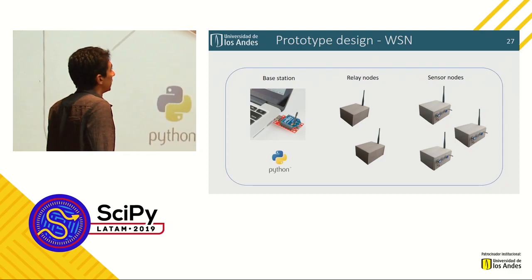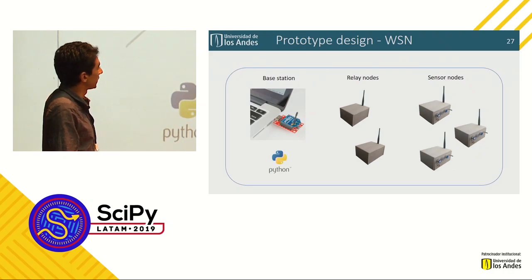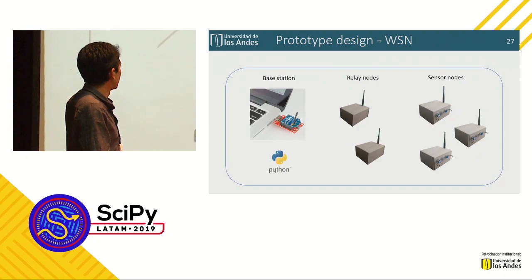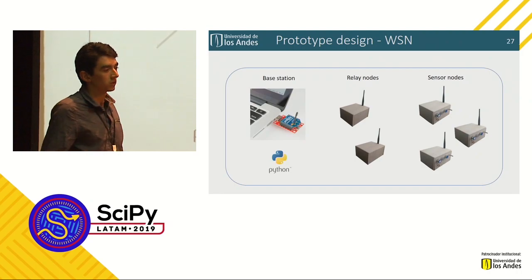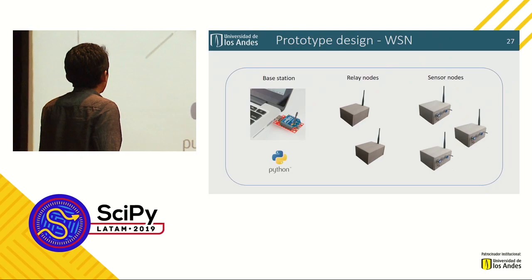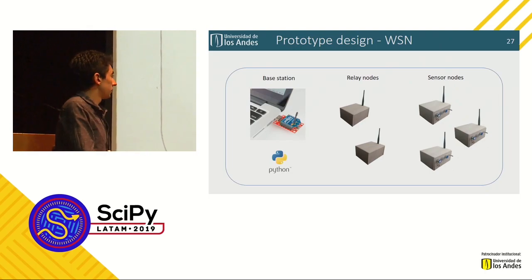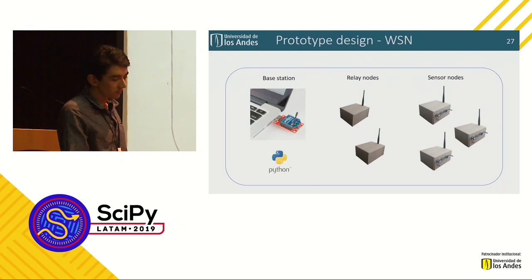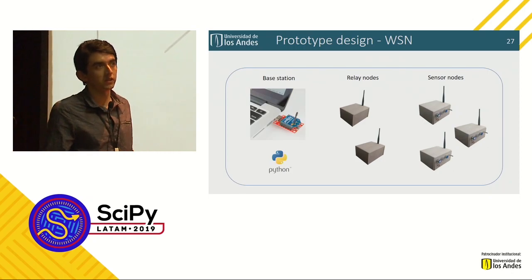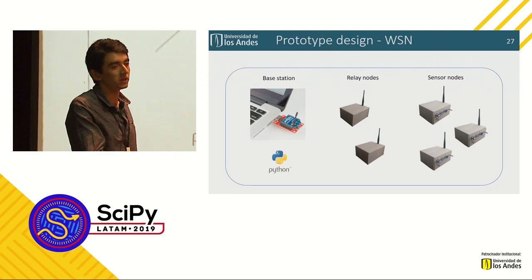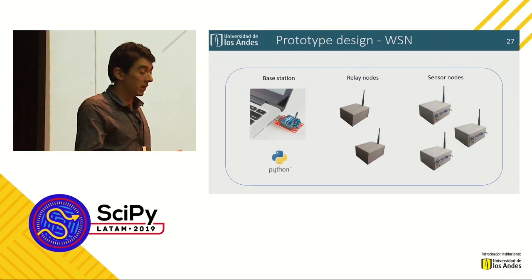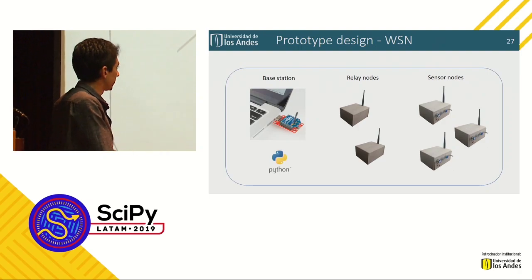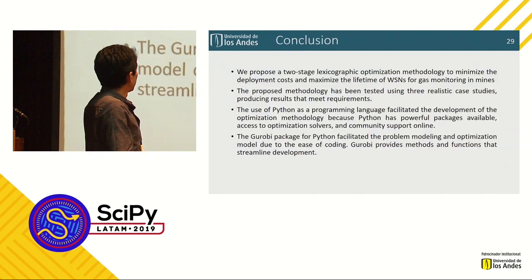We designed a prototype to implement our approach — a tabletop prototype with three sensor nodes, two relay nodes, and one base station node. The base station node is a computer with an XBee module for wireless communications. We developed software in Python for the base station node to collect all data generated by the sensor nodes. We deployed this prototype in the Senna training mine to test communication in the mine and validate our hypothesis.